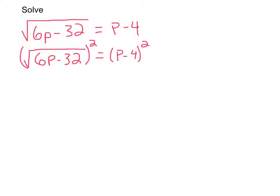Okay, now on this one, the square root and the squared cancel each other out. So I'm left with whatever is inside of that radical. In this case it's 6p minus 32.